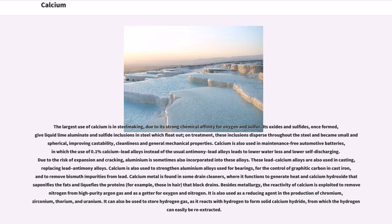Calcium metal is found in some drain cleaners, where it functions to generate heat and calcium hydroxide that saponifies the fats and liquefies the proteins, for example those in hair, that block drains. Besides metallurgy, the reactivity of calcium is exploited to remove nitrogen from high-purity argon gas and as a getter for oxygen and nitrogen. It is also used as a reducing agent in the production of chromium, zirconium, thorium, and uranium. It can also be used to store hydrogen gas, as it reacts with hydrogen to form solid calcium hydride, from which the hydrogen can easily be re-extracted.